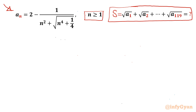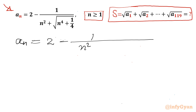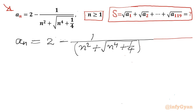Let's get started with our given aₙ. I will write aₙ equal to 2 minus 1 over n² plus square root of n⁴ plus 1/4. Now I will rationalize my denominator. I need to multiply by its conjugate in the numerator and denominator both — that is, n² minus square root of n⁴ plus 1/4.